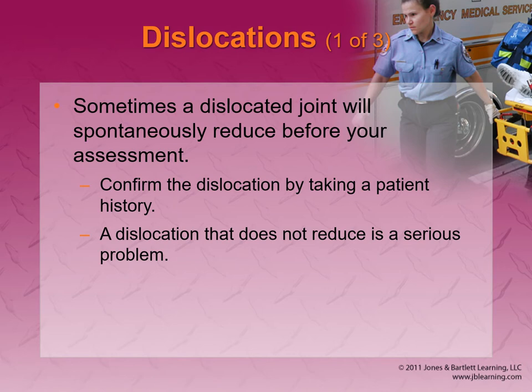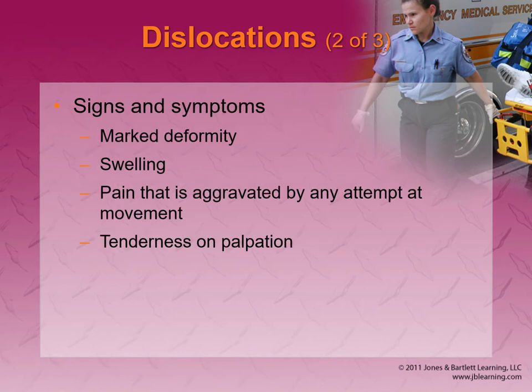Dislocation — the most commonly dislocated thing we're going to see is probably a shoulder dislocation, especially in the younger population. A lot of people will dislocate it a few times because as it loosens up that joint capsule, even if you pop it back in, that capsule is still going to be a little loose and you can re-dislocate it a lot easier. It's going to look different — you'll see deformity, lots of swelling, pain, and pain that's made a lot worse with movement.